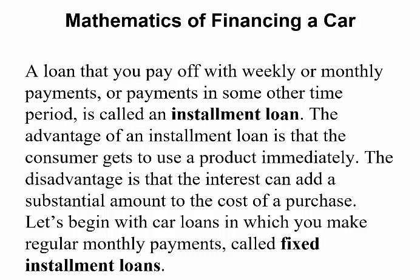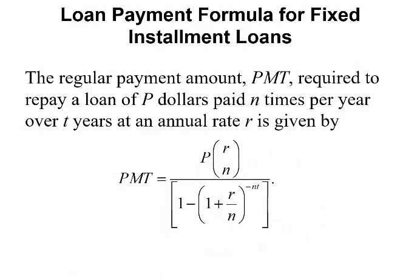Let's begin with a car loan in which you make regular monthly payments called fixed installment payments. The regular payment amount — how much you pay per month — we denote as PMT. That's the payment required to repay a loan of P dollars, where P is how much you borrowed, paid N times per year (usually 12), over T years, and R is your annual interest rate.